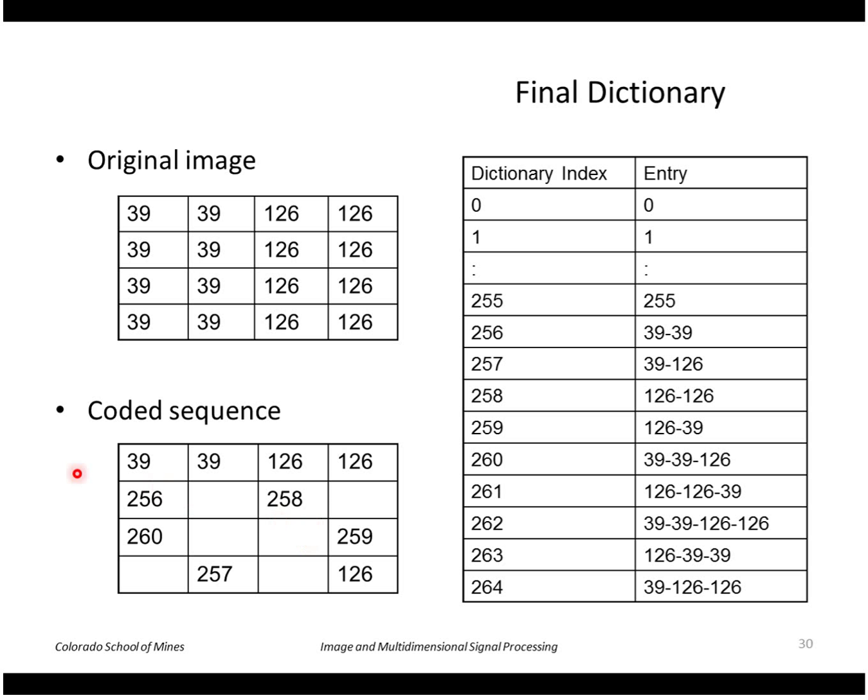And so forth. So after building the dictionary for this entire image, it would look like this, and these are the values that would be saved.